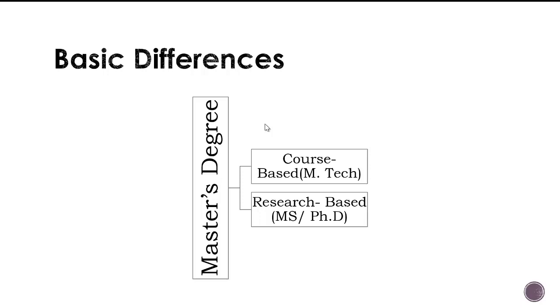So basic difference between these two, we can say master's degree once you have a B.Tech, you can do a course based degree like M.Tech, or a research based degree which is either an MS or a PhD. Basically MS or a PhD needs a master's degree, but in this video when we say PhD, it is a direct PhD which means you can pursue it right after your B.Tech.